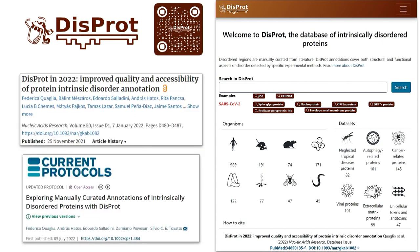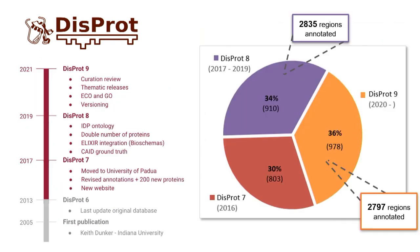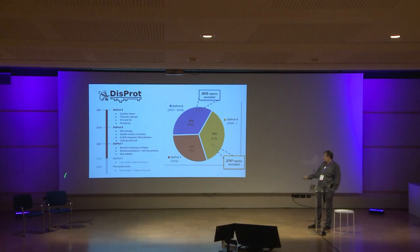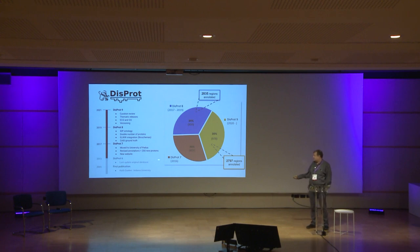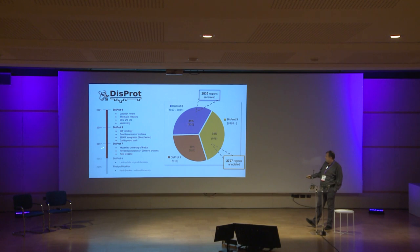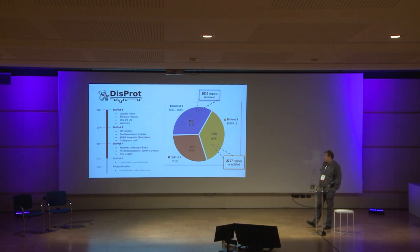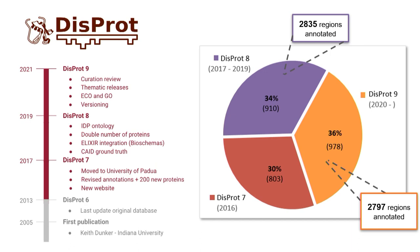The last DisProt publication was in the Nucleic Acids Research database issue in early 2022, and we also have a current protocol about how to use the database. DisProt was originally established by Keith Dunker at Indiana University, with the first publication dating back to 2005. It was hosted in the US for about a dozen years until DisProt version 6 in 2013, and then moved to the University of Padua under a new community curation paradigm.